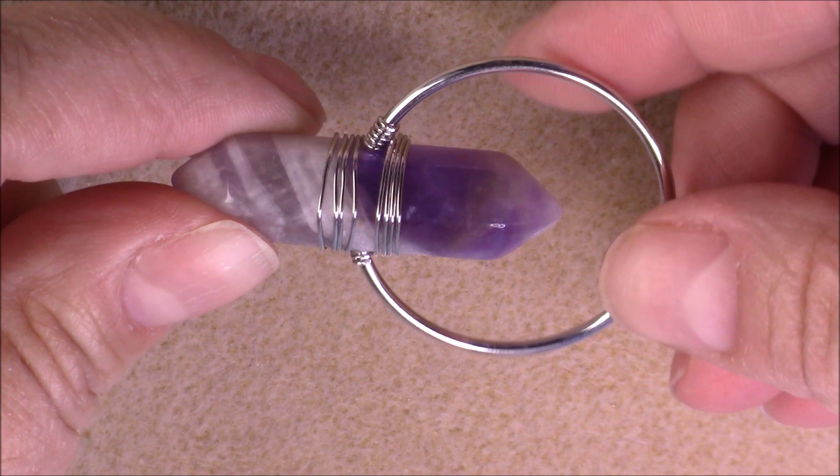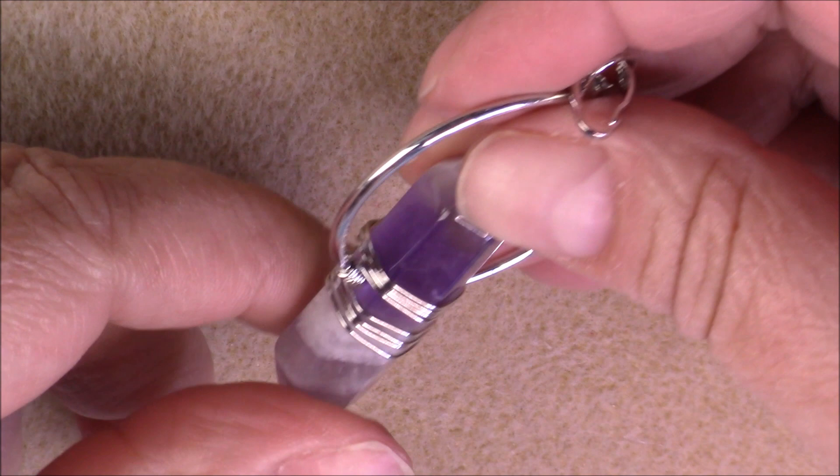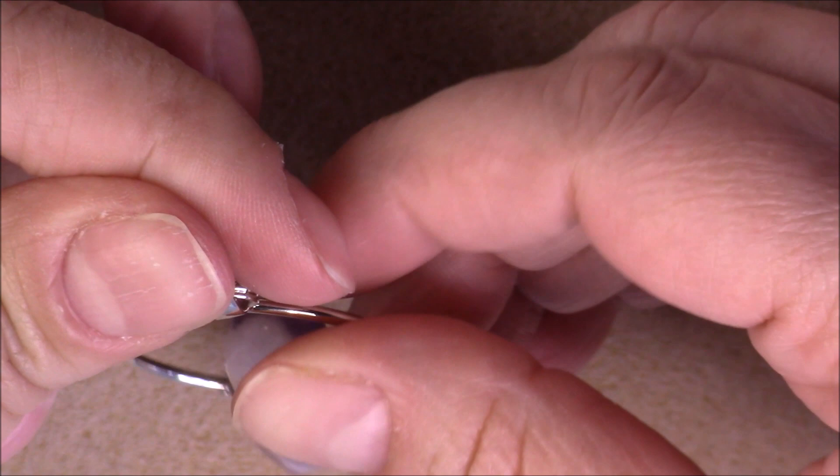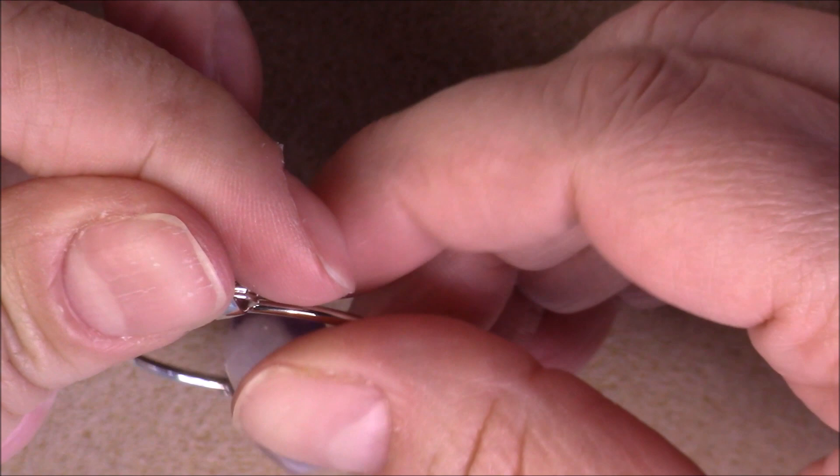I like this side better, so I might have to reposition that bail on there. But very nice. So that is it for the Bargain B Box for February 2022.